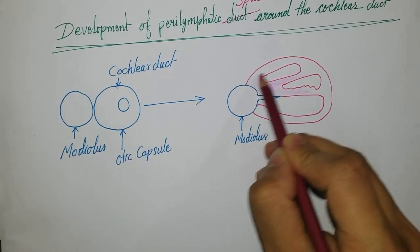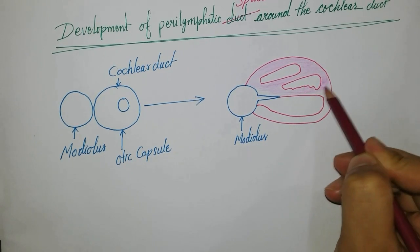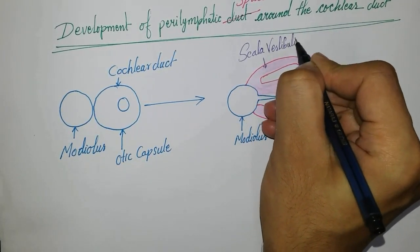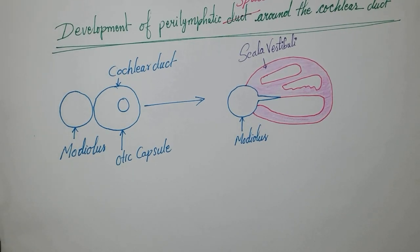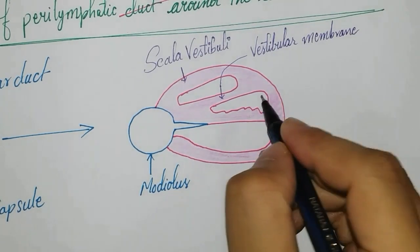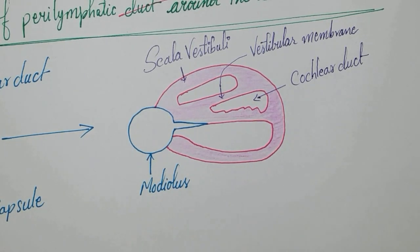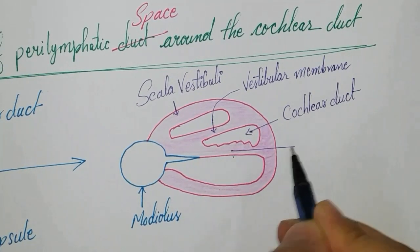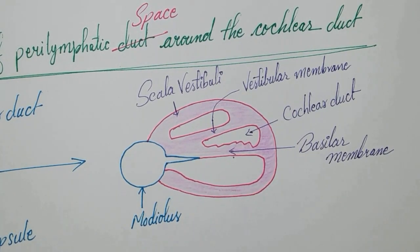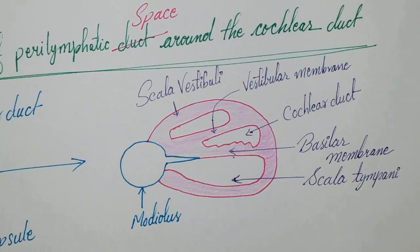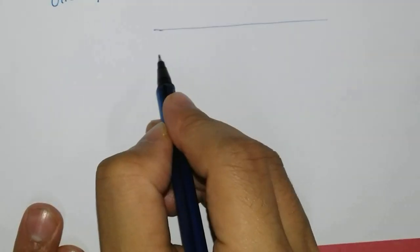The scala vestibuli is separated from the cochlear duct by the vestibular membrane, also called Reissner's membrane (spelled R-E-I-double S-N-E-R apostrophe S). The scala tympani is separated from the duct by the basilar membrane. The lateral end of the cochlear duct is attached to the surrounding cartilage by a spiral ligament, while its medial end connects to a cartilaginous process called the modiolus, which forms the future axis of the bony cavity of the cochlea.